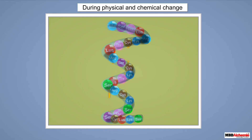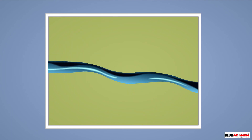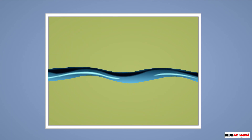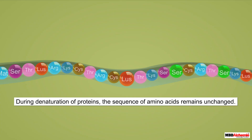However, if a native protein is subjected to physical or chemical changes — such as a temperature change or change in pH — the hydrogen bonds get disturbed, causing the shape of the protein to change. The protein unfolds and loses its biological activity. This is called denaturation of proteins. Interestingly, the primary structure of a protein remains unaltered even during denaturation, meaning the sequence of amino acids remains unchanged.